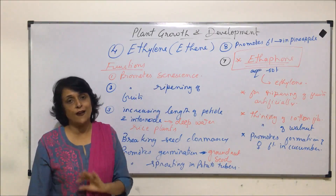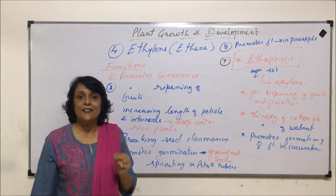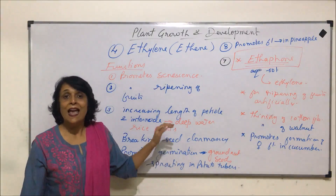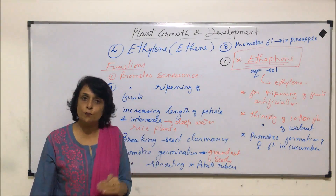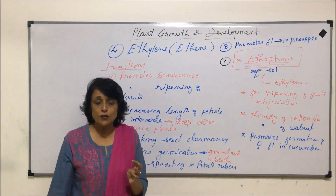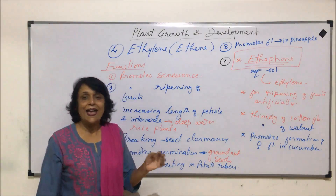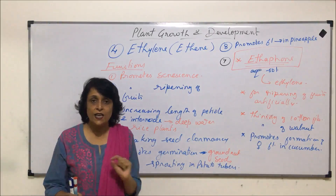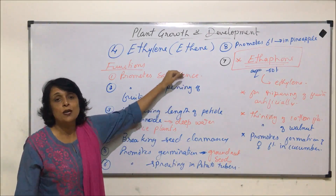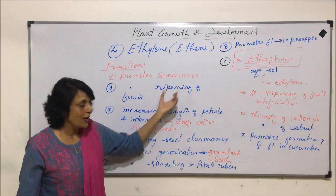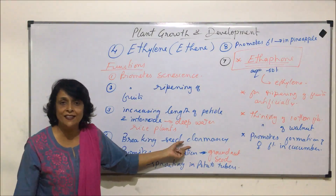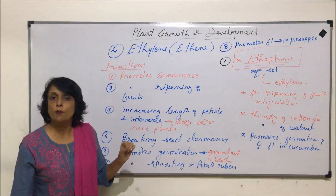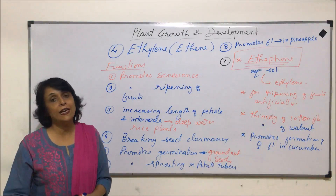Ethylene is a gaseous phytohormone, and when we talk about the five phytohormones divided into promoters and inhibitors — promoters like auxins, cytokinins, and gibberellins promote cell division and growth, while inhibitors like abscisic acid inhibit these processes — ethylene is placed in both categories. It promotes aging, which is a retardation of growth, while also promoting many other activities. So ethylene acts as a promoter for certain functions and as an inhibitor for others.